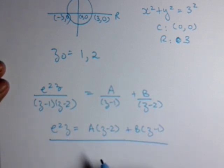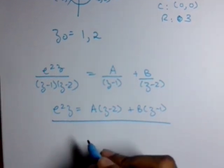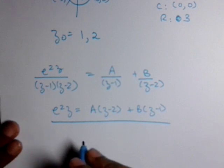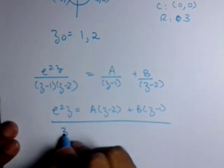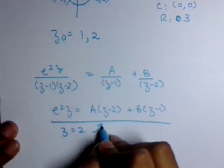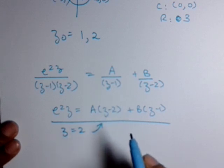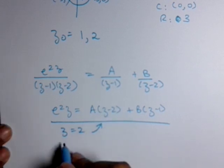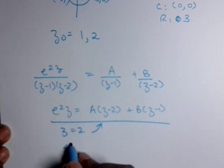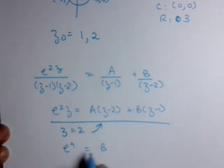So now this is the equation and we can put the value of z according to our convenience. Putting z equal to 2 in this equation, z minus 2 will become 0, and this will become e raised to 4 is equal to B.